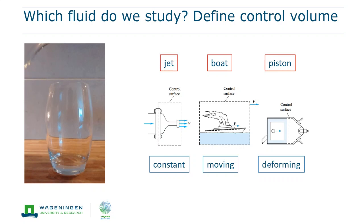Such a control volume can be constant in space attached to the object in which the fluid flows. But the control volume could also move with a certain relevant object, for instance with the ship.